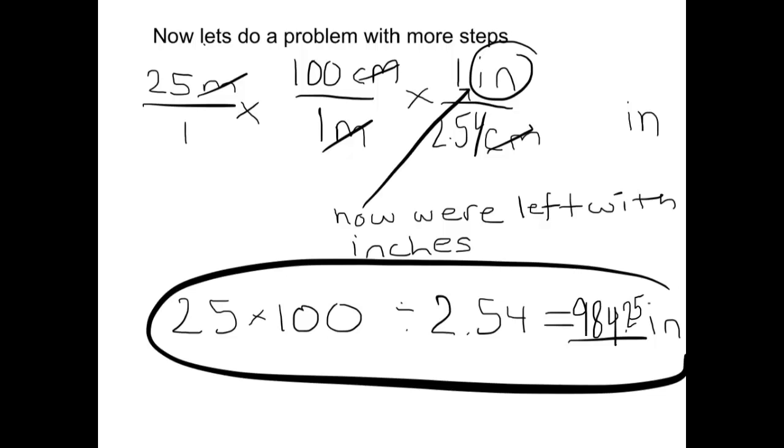Now the meters cancel each other out and we're left with 100 centimeters. Now we want to try to cancel out the centimeters, and we need the centimeters to be on the other side of the equation, so we do one inch over 2.54 centimeters. The centimeters cancel each other out, now we're left with inches.